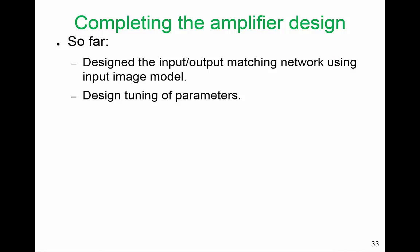In this final part, we're going to complete the amplifier design. So far, we've designed the input and output matching networks using the input image model. We designed the input and output matching networks together, because it is not possible to design those separately and obtain an amplifier with good gain characteristics, noise characteristics, and also be stable. We simplified the design considerably because we used the image model with negative capacitors, negative inductor, and we changed the port impedances as well. We ended up with just five parameters to vary.